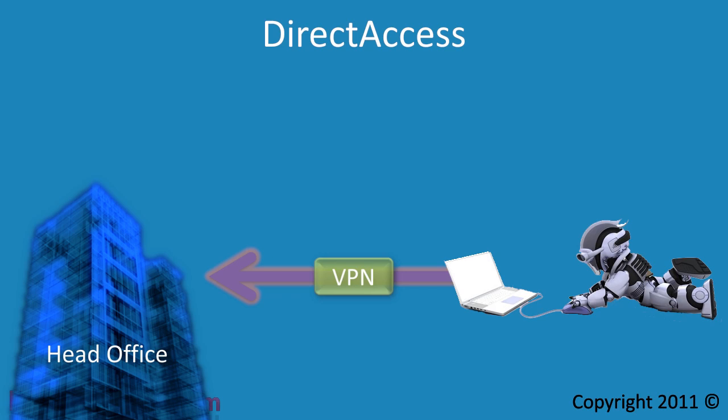Direct access is a new feature in Windows 7 that allows you to automate the process of connecting back to the office. Using direct access the computer transparently connects back to the corporate network with no interaction from the user — they don't even have to enter in a password.